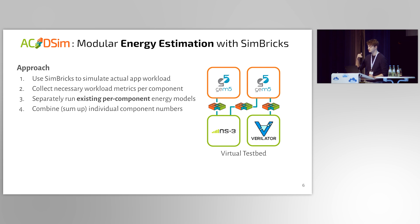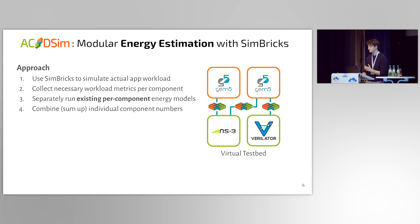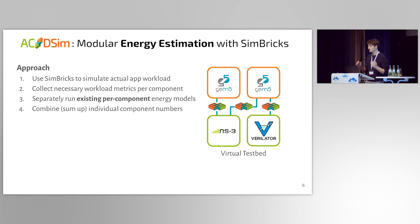As already discussed, first I use Simpricks to simulate the workload applications. Then, during simulation, I collect the necessary workload metrics for accurate dynamic energy estimation. With ACDSim, I make use of the fact that there's already existing work for estimating the energy consumption of the individual components in our system. Applying these existing energy models, I get separate numbers per component, and in the end I can simply sum this up into one full system estimate.